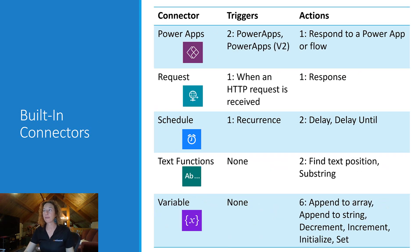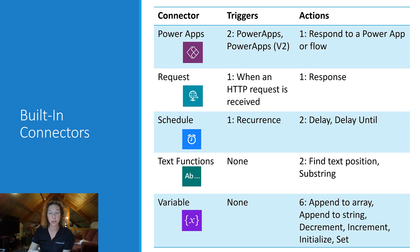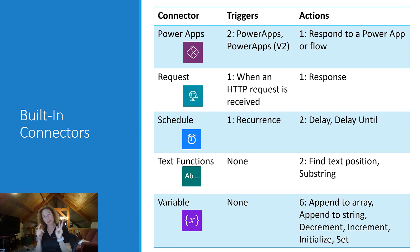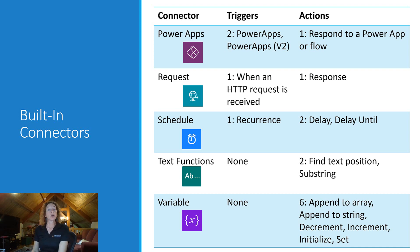Then we have our Power Apps connector. It has two triggers: Power Apps and Power Apps Version 2. And there's one action: Respond to a Power App or Flow. Those two different triggers are based on what the Power App is — one of them is for Sales and Field Service, and another is more for a custom Power App. For Request, there is one trigger — When an HTTP Request is Received — and one action: Response.